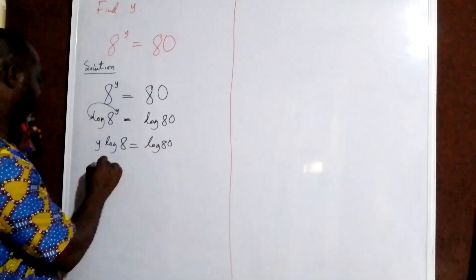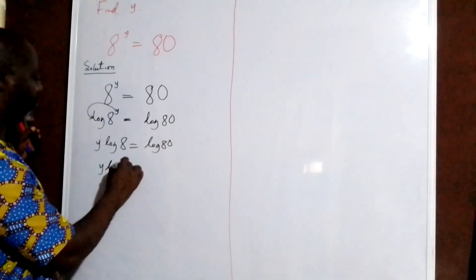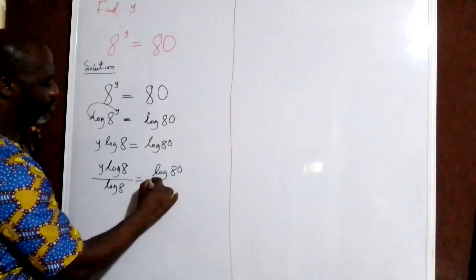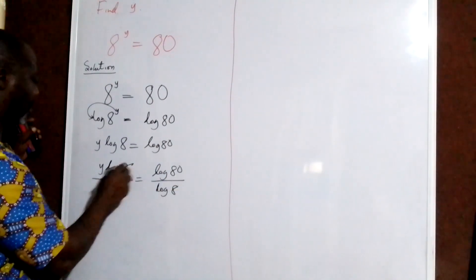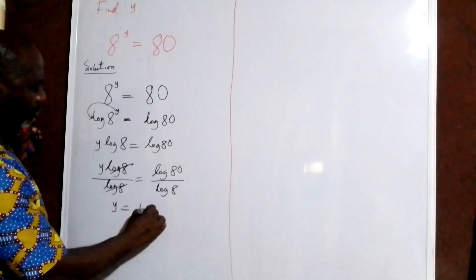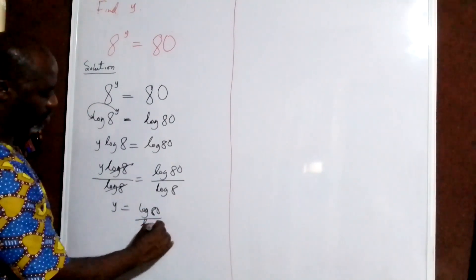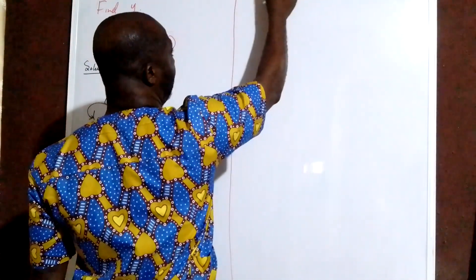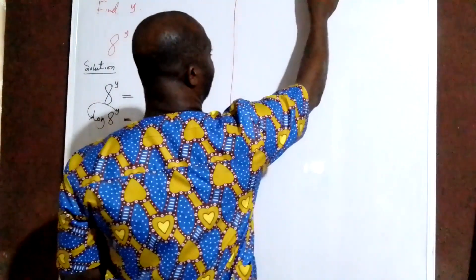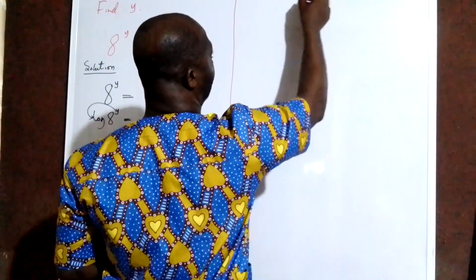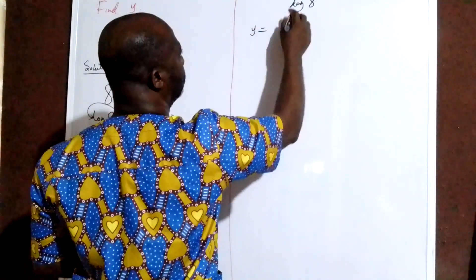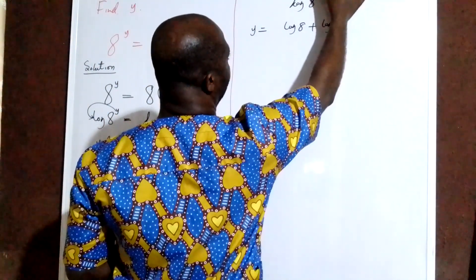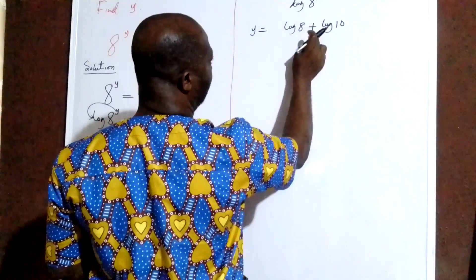So we divide both sides by log 8. We have y log 8 over log 8 equal to log 18 over log 8, so log 8 and log 8 will cancel out. So we have y equal to log 18 over log 8. Now I am going to apply a rule here where log 18 gives me log of 8 times 10, which means log 8 plus log 10, because log of 8 times 10 equals log 8 plus log 10.